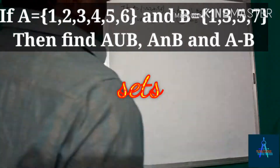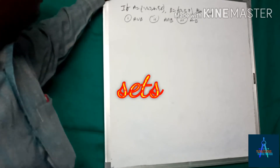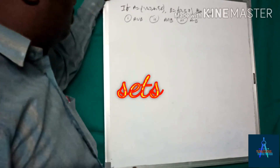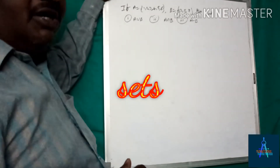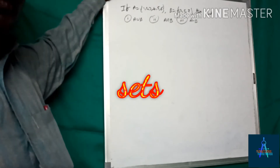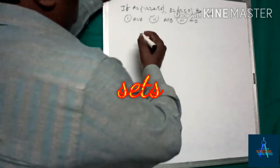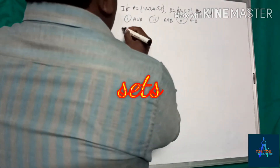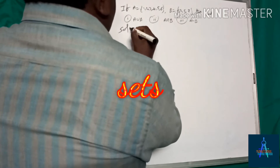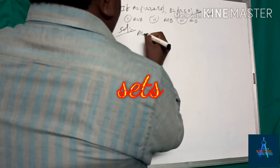So we are going to learn three operations in sets: union, intersection, and difference. The first one is A union B.